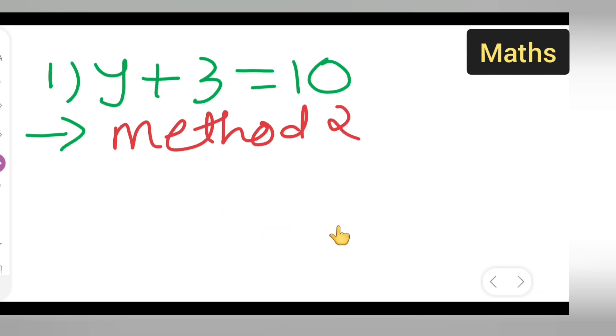Now let us see method 2. In this, what you have to do is subtract 3 on both sides. So y plus 3 minus 3 equals 10. So I will get y plus 0 equals 10.